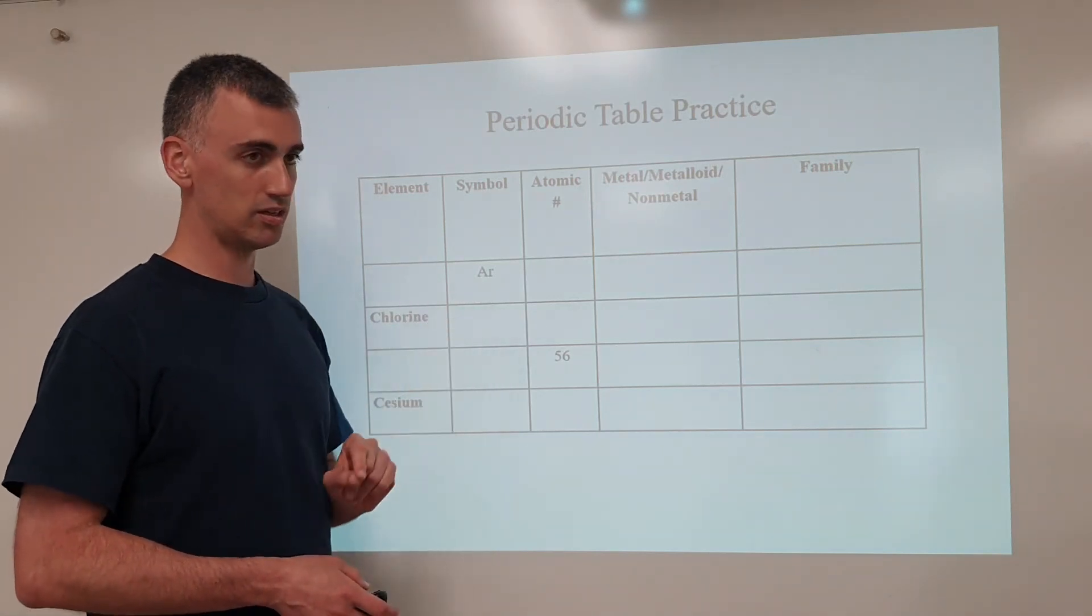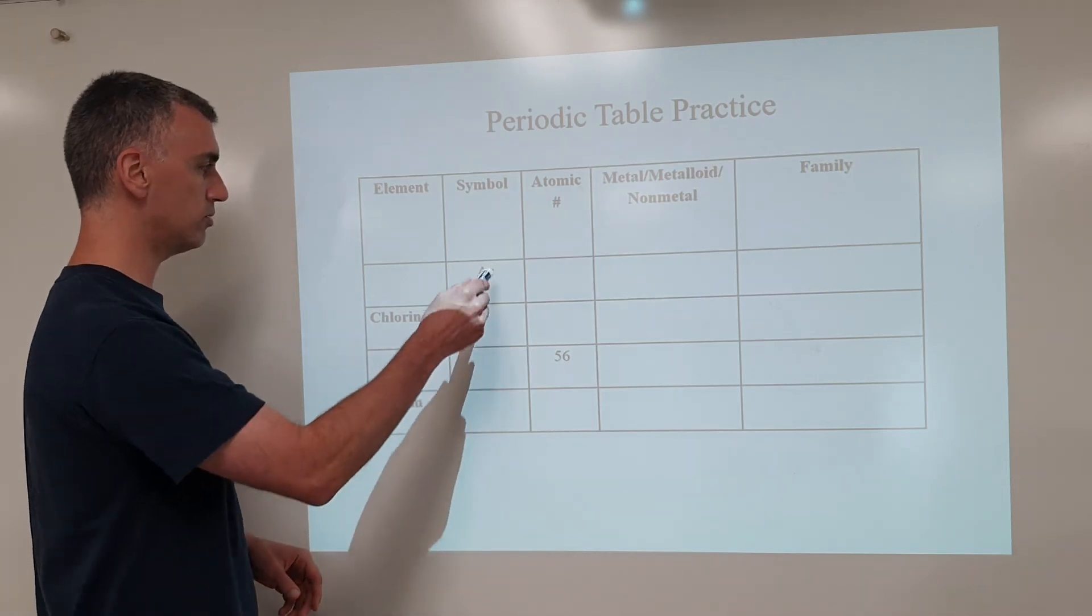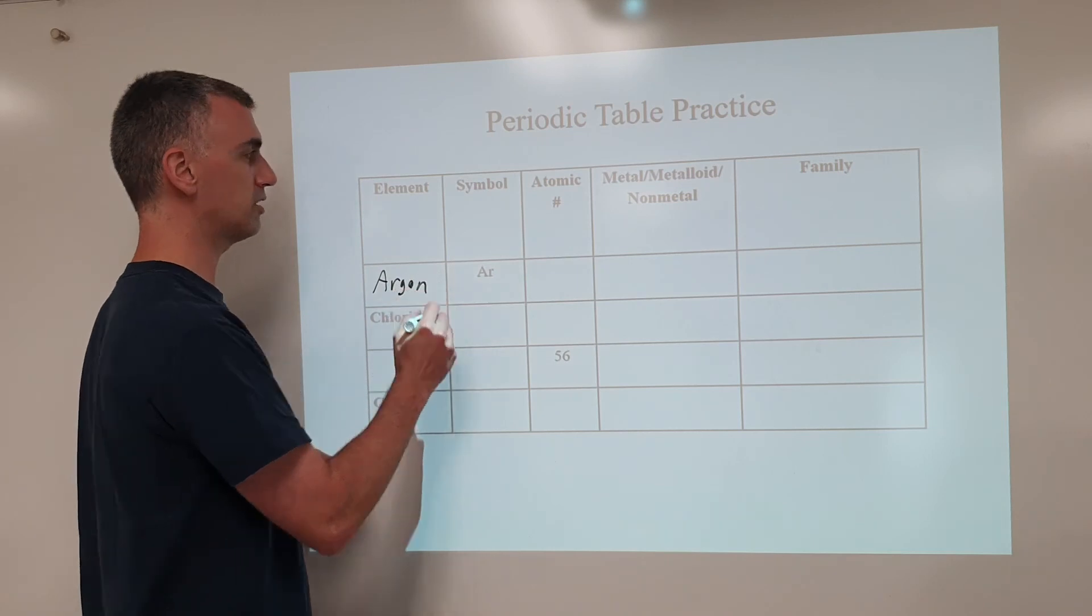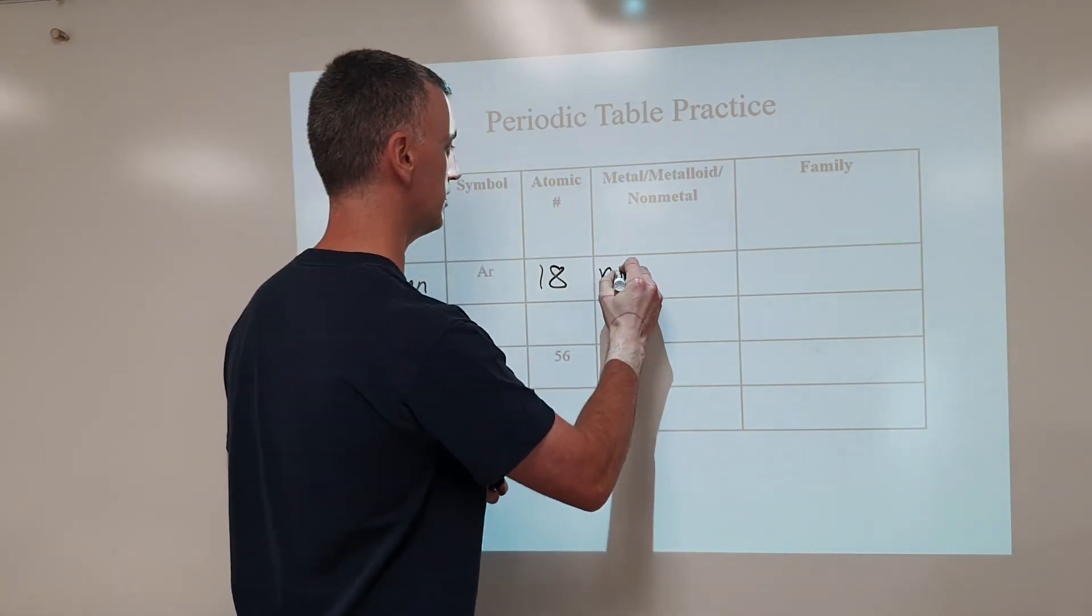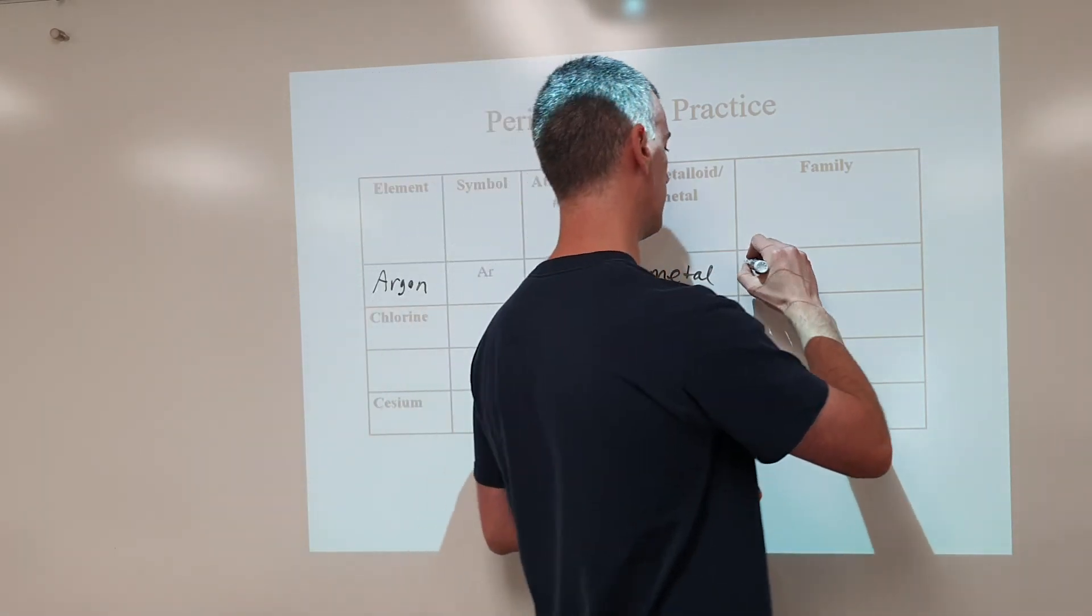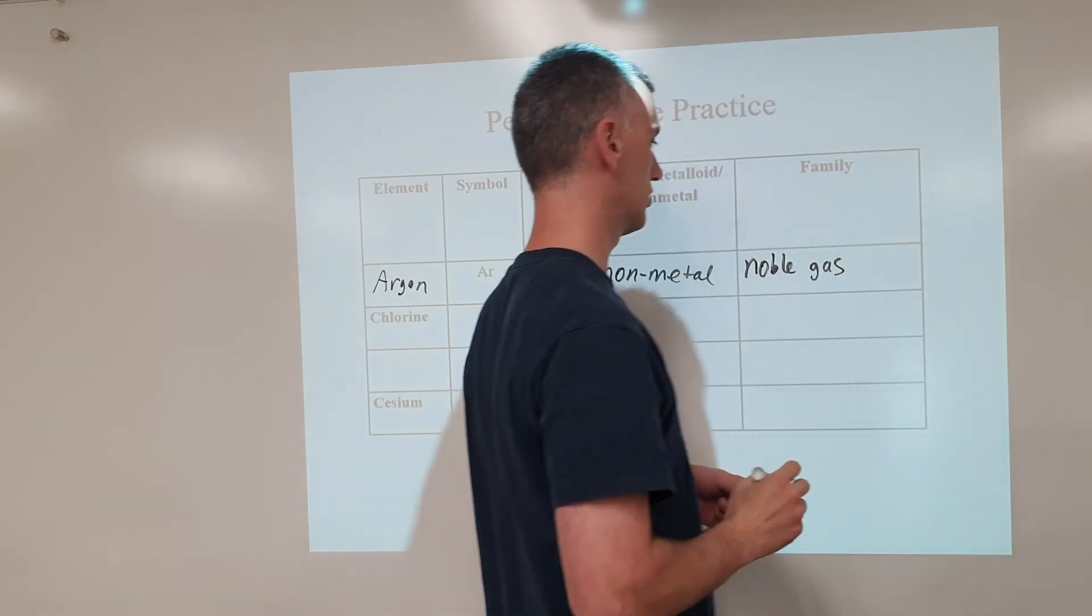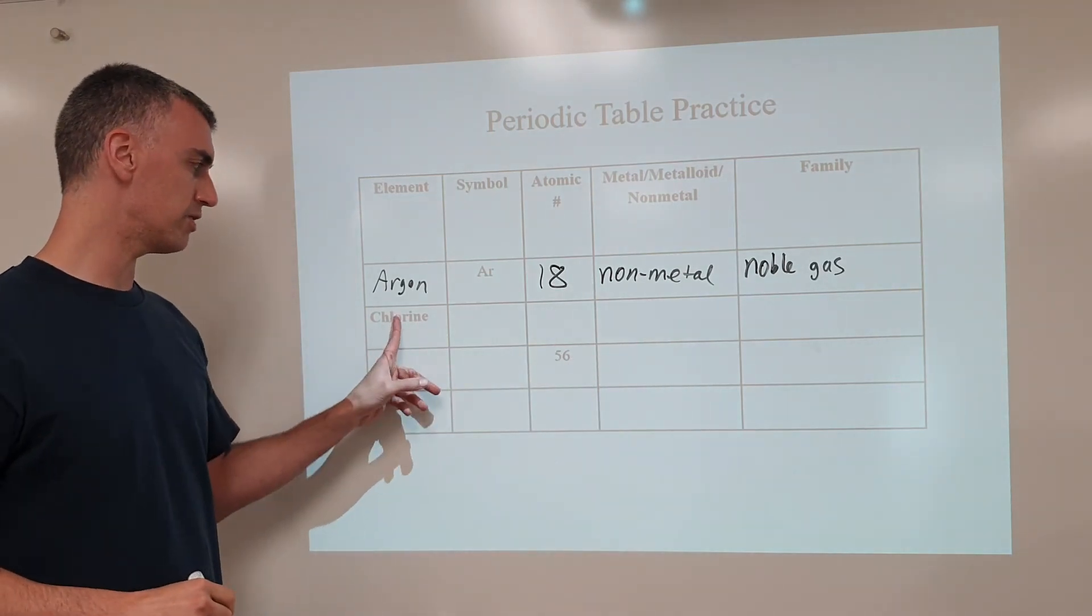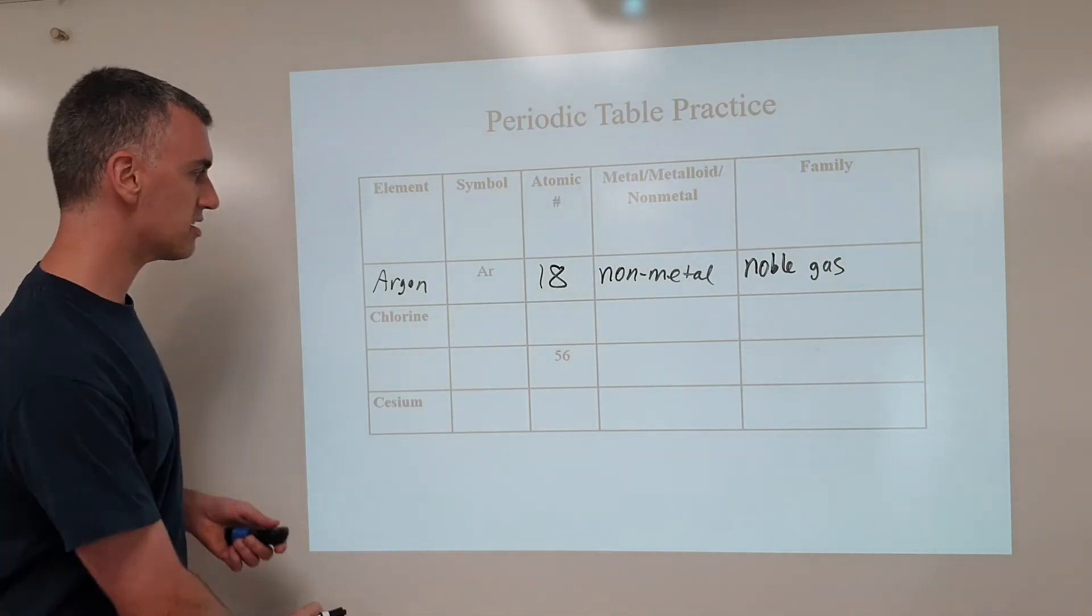Now, do this on your own. I will show you really quickly what is intended for it. You look what you're given and then complete the rest of it. Like, for example, AR is argon. If you look at the periodic table, it's atomic number 18. It is a non-metal, and it belongs to the noble gas family. And you do the similar sorts of things for the other three of these, based on the information you give, and you complete the rest.